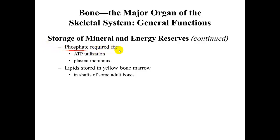Phosphate is also stored in bones. It is used primarily for ATP utilization — that is, to make adenosine triphosphate — and can be incorporated into the plasma membrane. Kinases can also use phosphate to phosphorylate enzymes, turning them on or off.